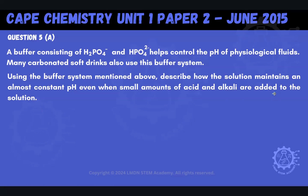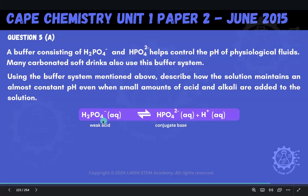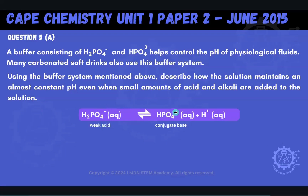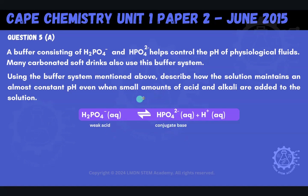They're asking us to describe the action of buffers — how do buffers work in specific relation to these components? The first thing we want to do is write out our equilibrium reaction. Whenever we're making a buffer, we add a weak acid and then the salt of its conjugate base. This equilibrium that gets set up is based on those components: a weak acid and the salt of its conjugate base.